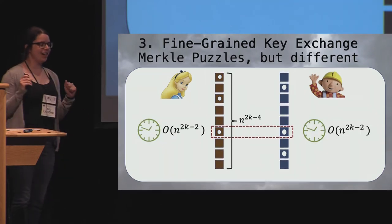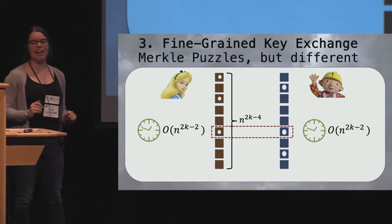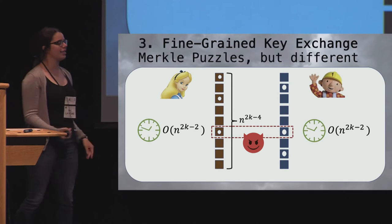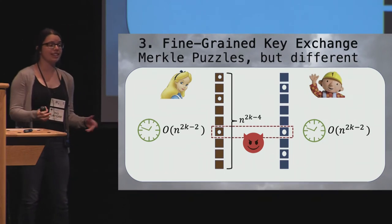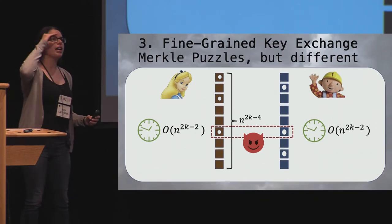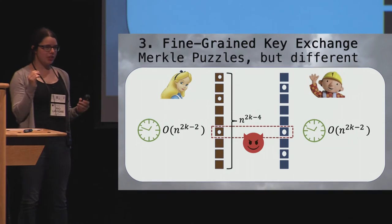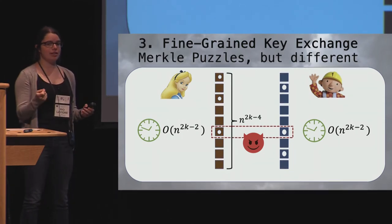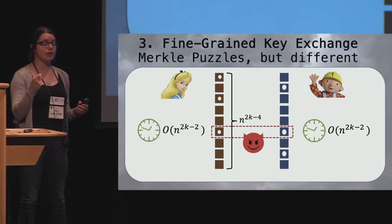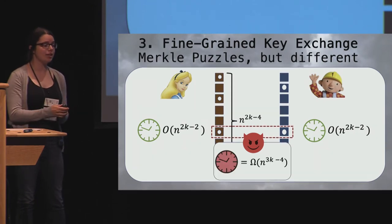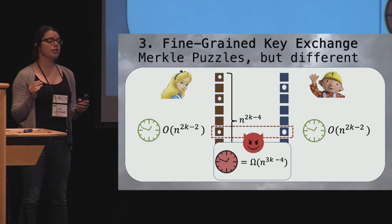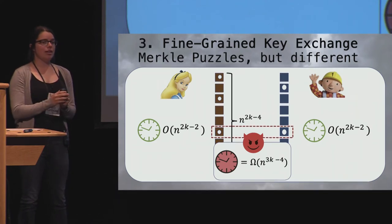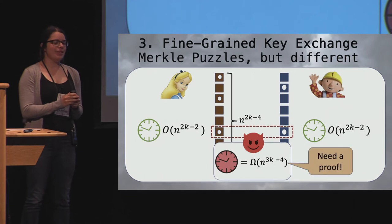So, how much time should the adversary take? Well, we would hope an adversary just seeing these lists, and not knowing where any of the solutions are planted, has to go through and check every single one. Brute force checking n to the 2k minus 4 instances. Meaning, n to the 2k minus 4 times n to the k time total to find the place where Alice and Bob intersect. But, this needs a proof.